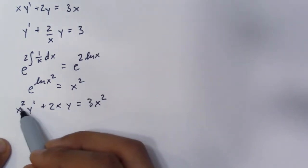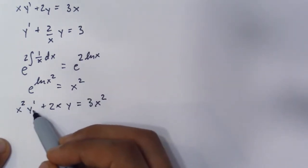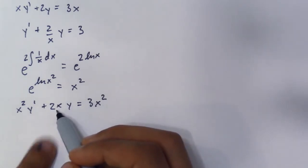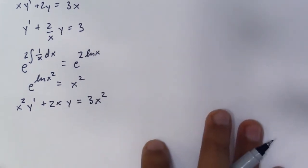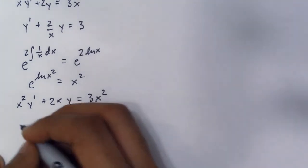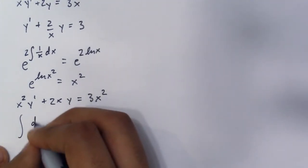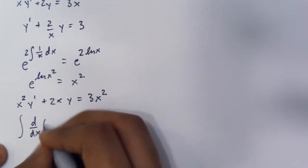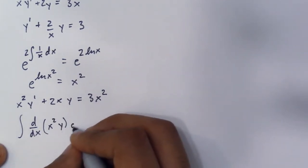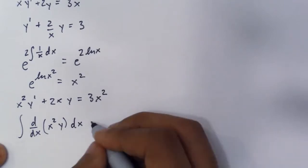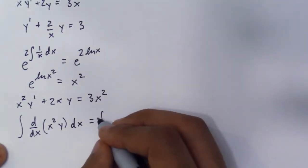So you have x squared here, derivative of y prime plus the derivative of x squared which is 2x times y. So we can rewrite this equation simply as the integral of d dx of x squared times y dx, which equals the integral of this.